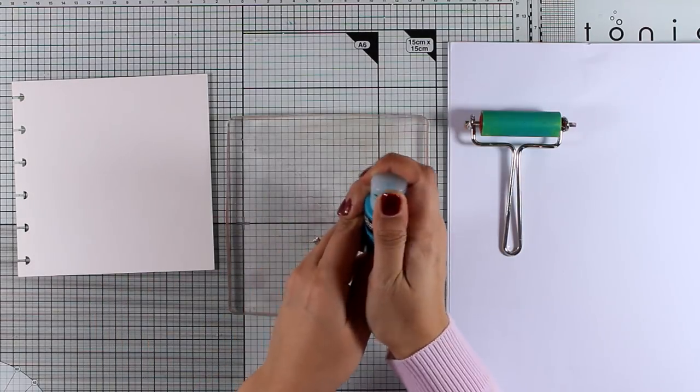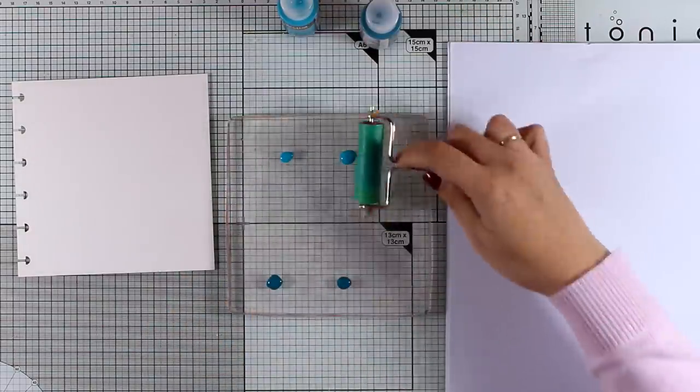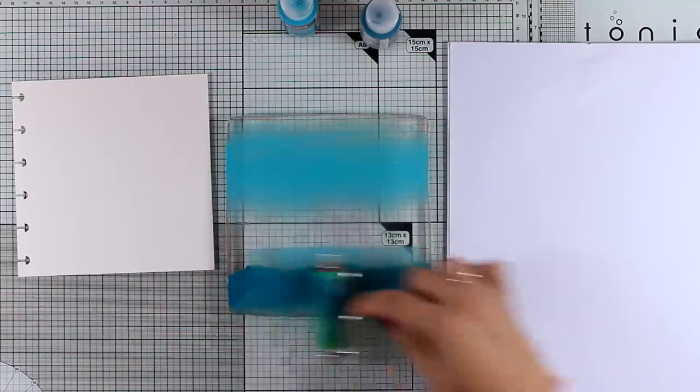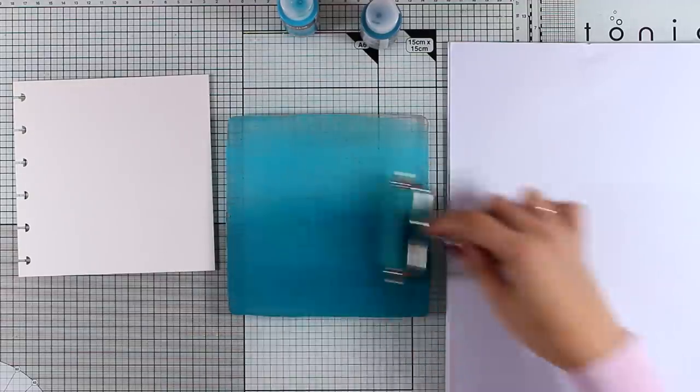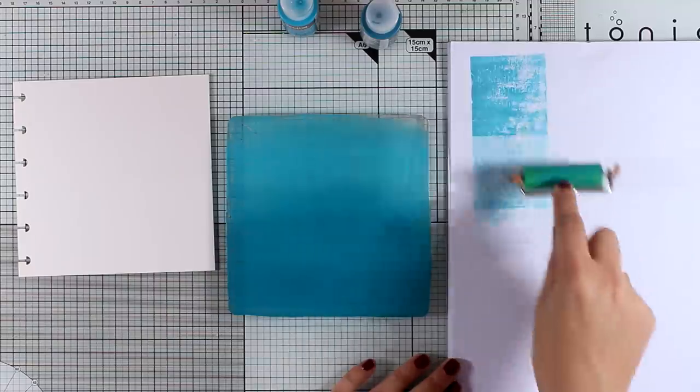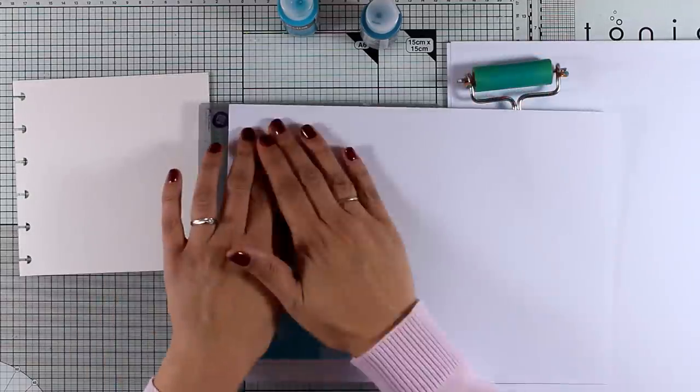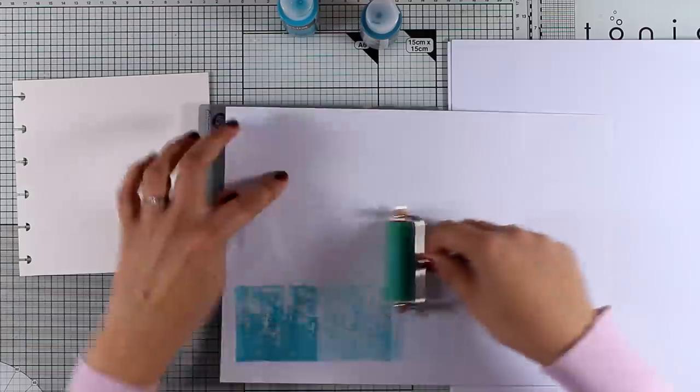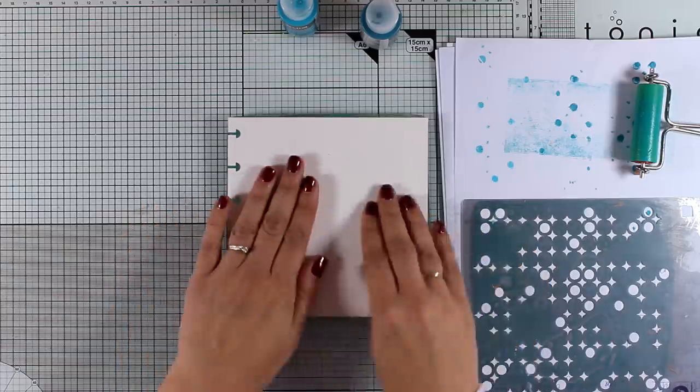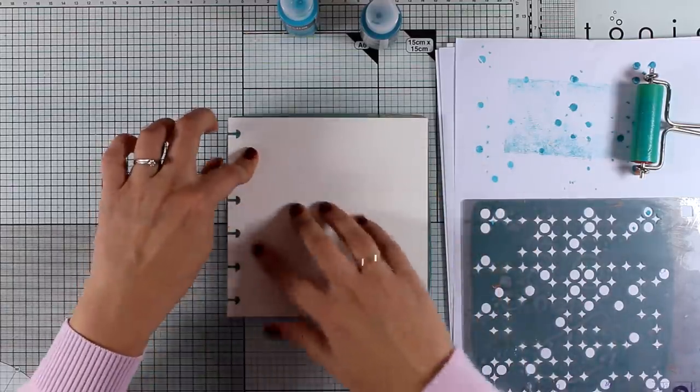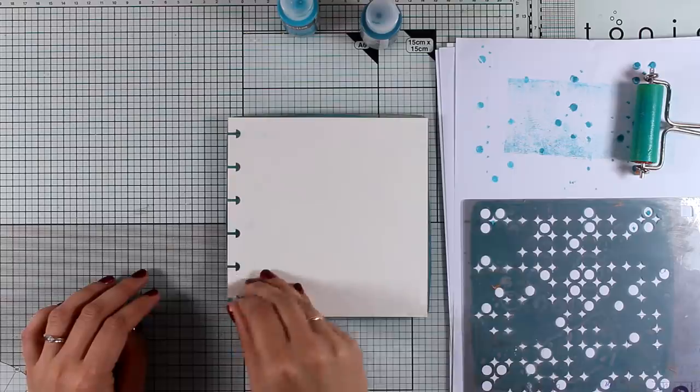Today I decided to do some jelly printing. I'm using Deco Art Media acrylics—these are fluid acrylics—and I'm going to apply them on my jelly plate with my brayer. I'm bringing in a stencil to place on top of my jelly plate to add a little bit of interest. Now I'm ready to do my first print, placing the paper directly on top of my jelly plate. I'm going to press with my fingers all over the place, and you can use your brayer for doing that if you wish.